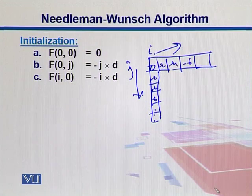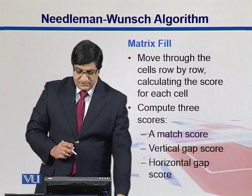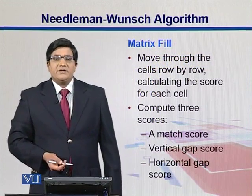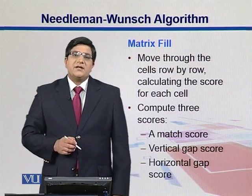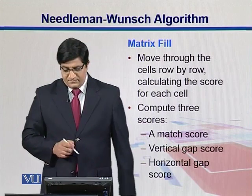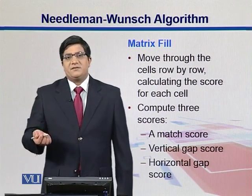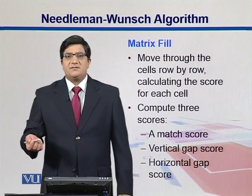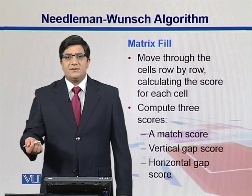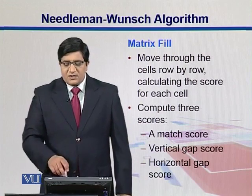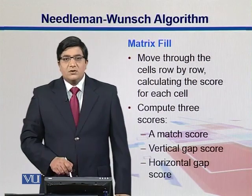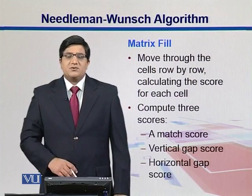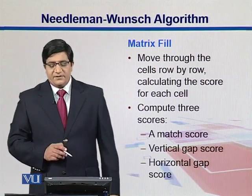We move through the cells row by row calculating the score for each cell — that is matrix filling. We can compute three scores: a match score where two residues match, a mismatch score, and gap scores. For example, a match might add three, while a mismatch subtracts some value, depending on the scoring scheme. We also compute a vertical gap score moving top to bottom and a horizontal gap score when introducing a gap.